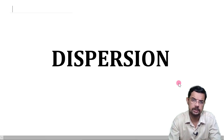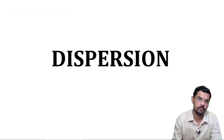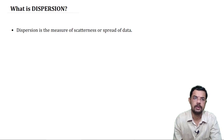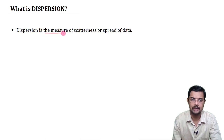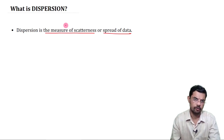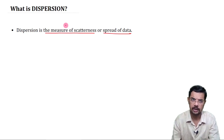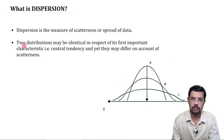In this class we shall discuss dispersion from statistics — measures of central tendency and dispersion. Dispersion is the measure of scatterness or spread of data. Here we try to measure how scattered the data is from some point, which is usually the mean or the median — the measure of central tendency.